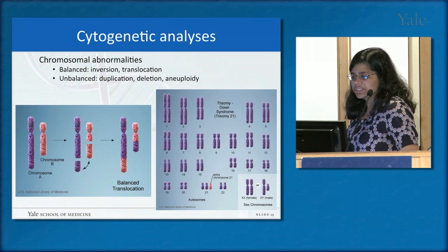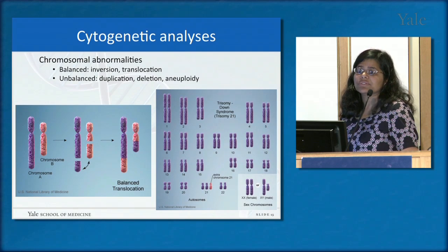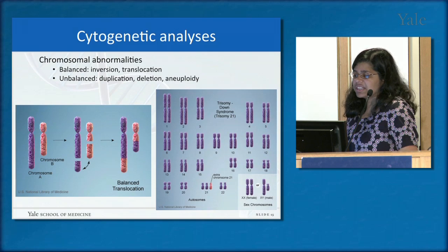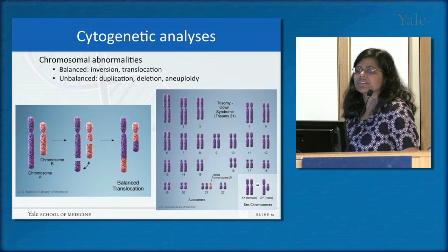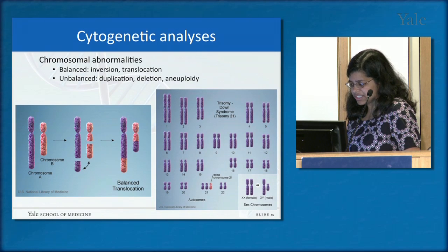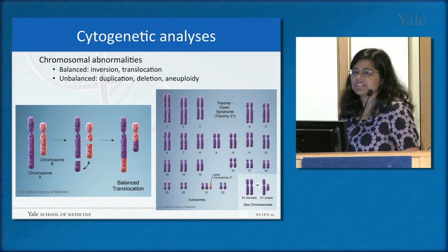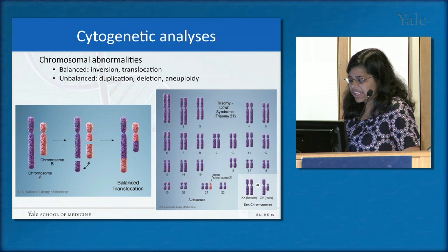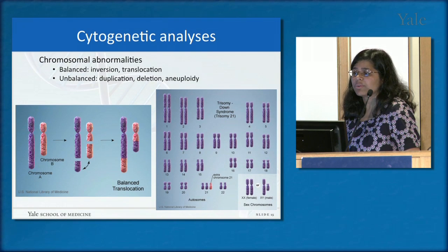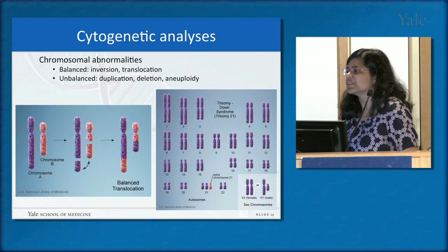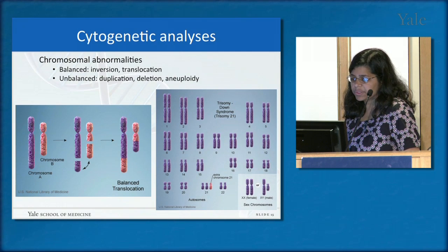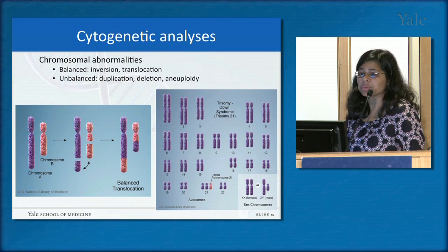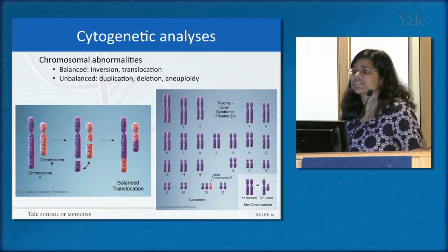Another method is cytogenetic analysis — looking for chromosomal abnormalities. Balanced chromosomal abnormalities involve no net gain or loss of genetic material, but include inversions or translocations. In a balanced translocation, two chromosomes switch ends, leaving two breakpoints that could disrupt an important brain-expressed gene. Unbalanced chromosomal abnormalities, like Down syndrome or trisomy 21, involve a net gain of chromosomal material — an extra chromosome 21 — with well-known clinical consequences.